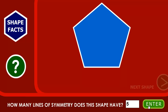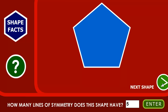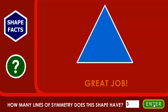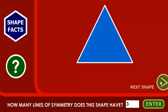Great job, let's move on to the next one. This is an equilateral triangle. We can fold it in this way — one, two, three. I'm sure this is three. So the line of symmetry is three.